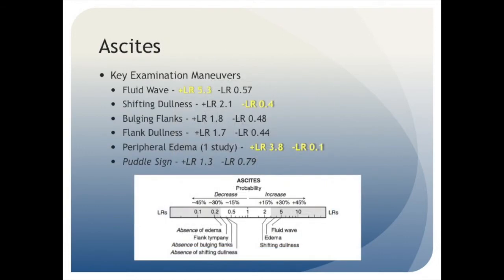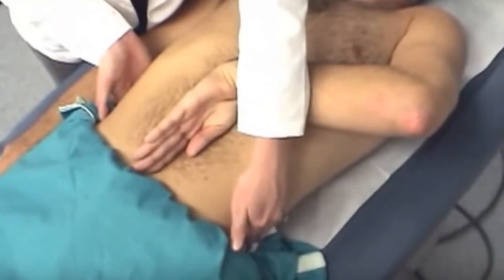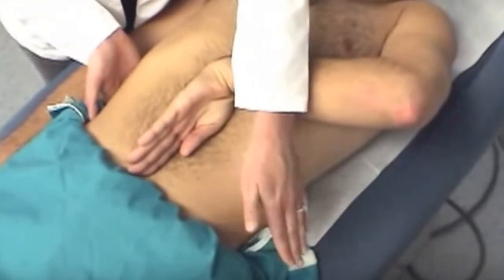So once you've estimated your pretest probability, it's time to move on to the physical exam. Below are listed some classic physical exam maneuvers along with their associated likelihood ratios in assessing the patient with ascites. Let's start by discussing a positive fluid wave which has the highest positive likelihood ratio at 5.3 meaning if the sign is present the patient is about 30 percent more likely to have ascites.